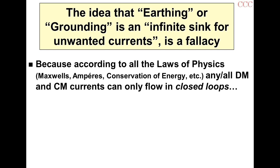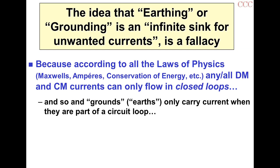If you think you saw it happening, what was actually happening was something else with a similar effect. According to all the laws of physics, any and all differential mode and common mode stray currents can only flow in closed loops. A current can only flow in a closed loop. So a safety ground or earth can only carry current if it's part of a circuit loop — it's not some kind of infinite sink where unwanted currents disappear.